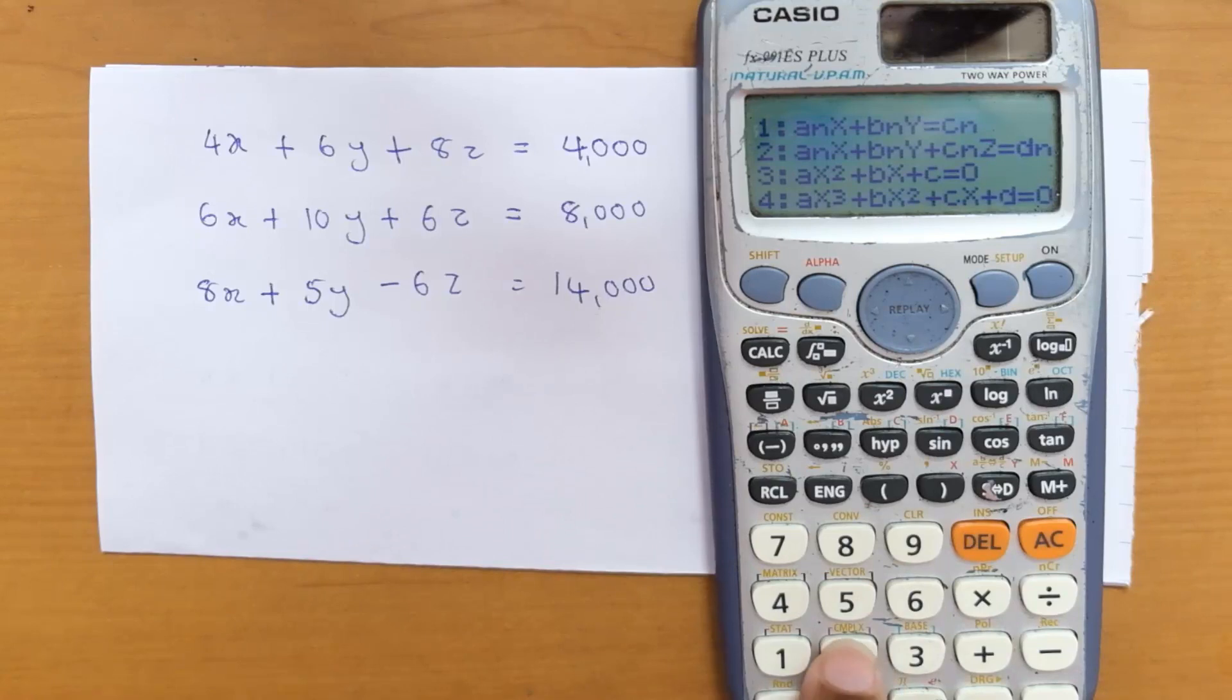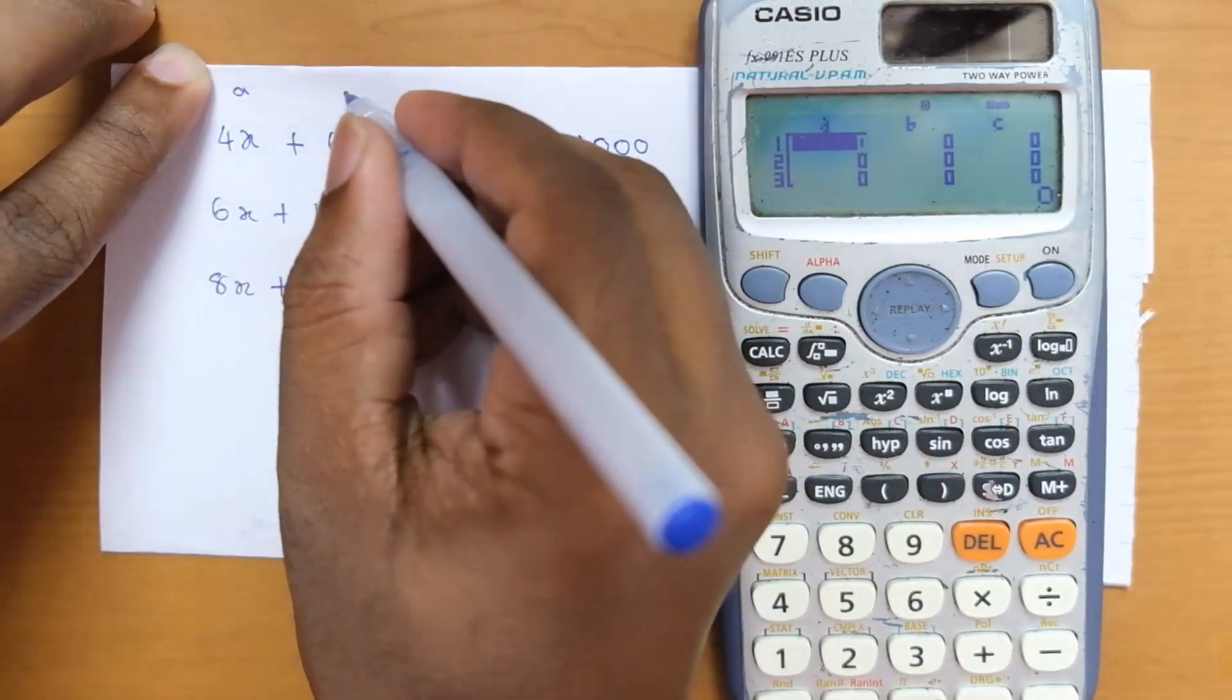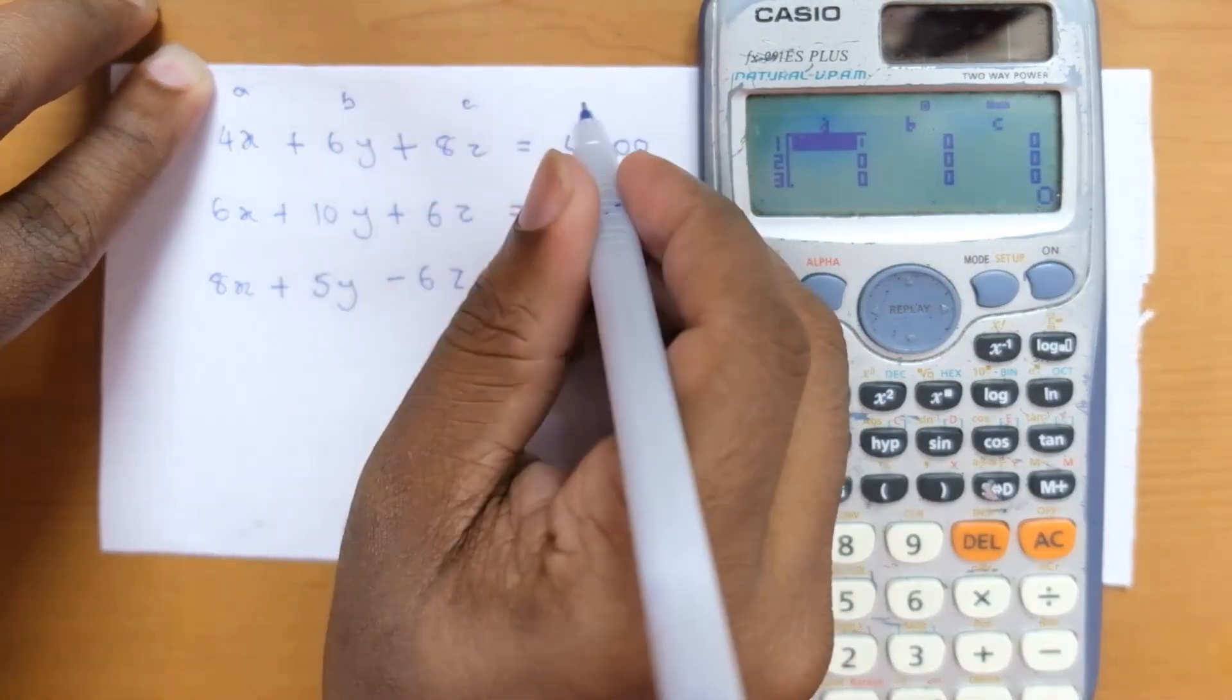You are getting a table like this. Let's enter the values. In this particular question, this is going to be a, this is b, this is c, and this is d.